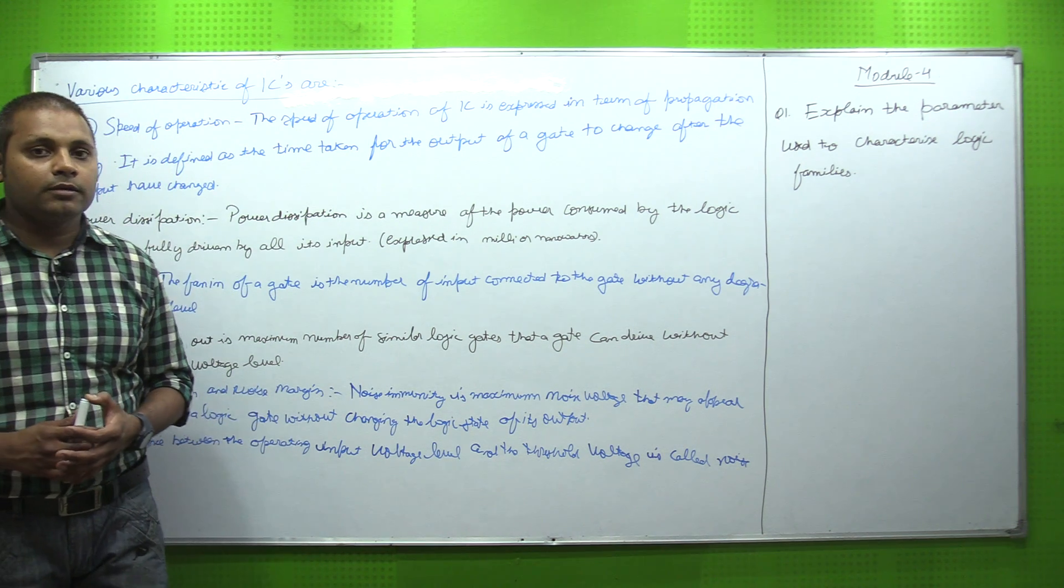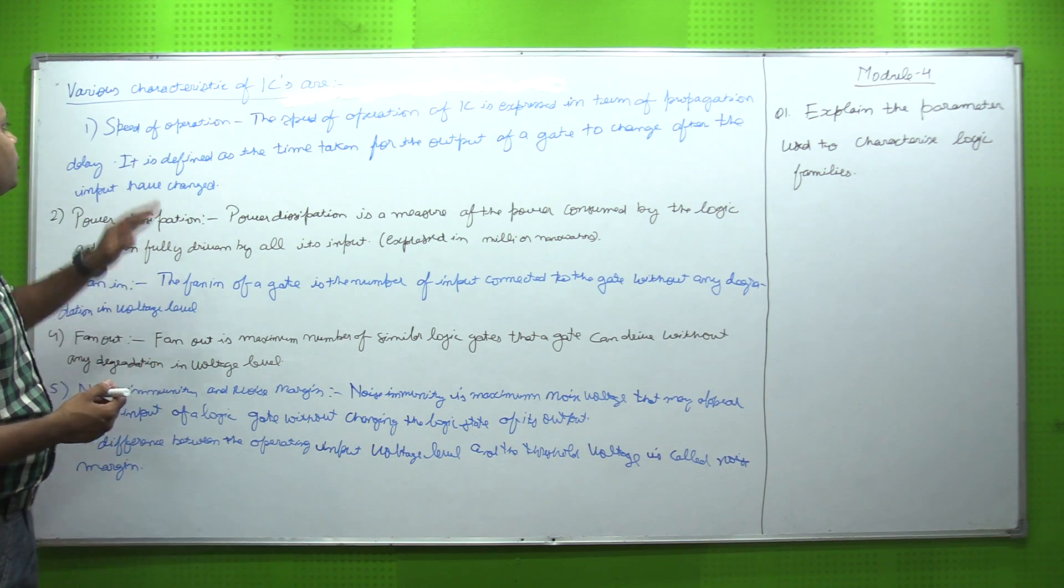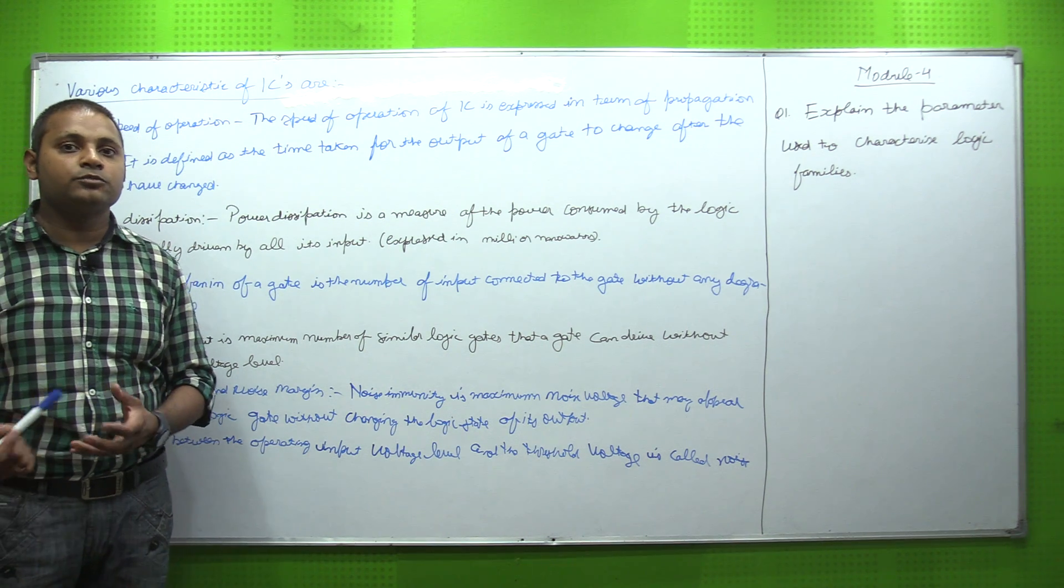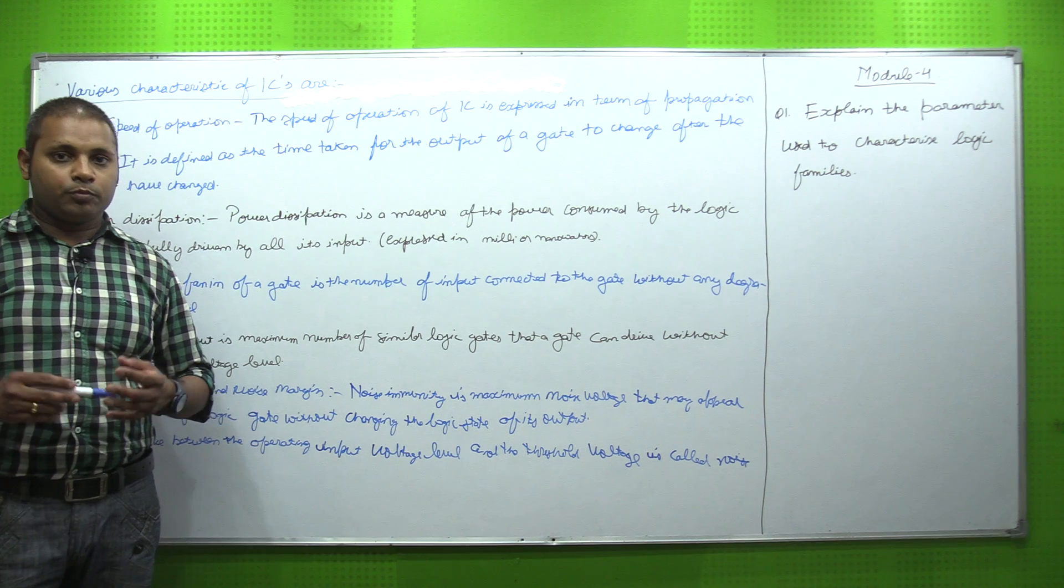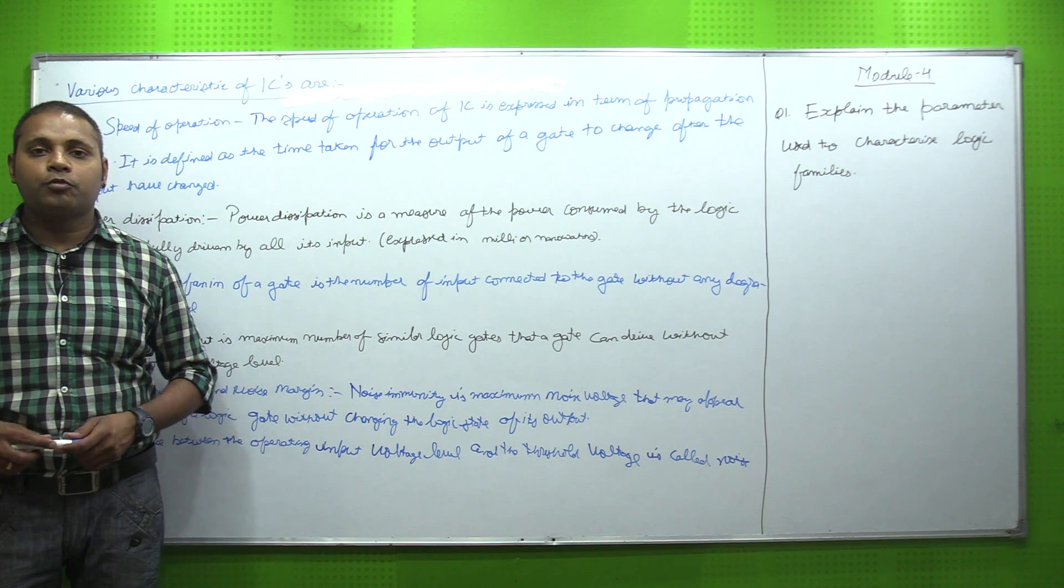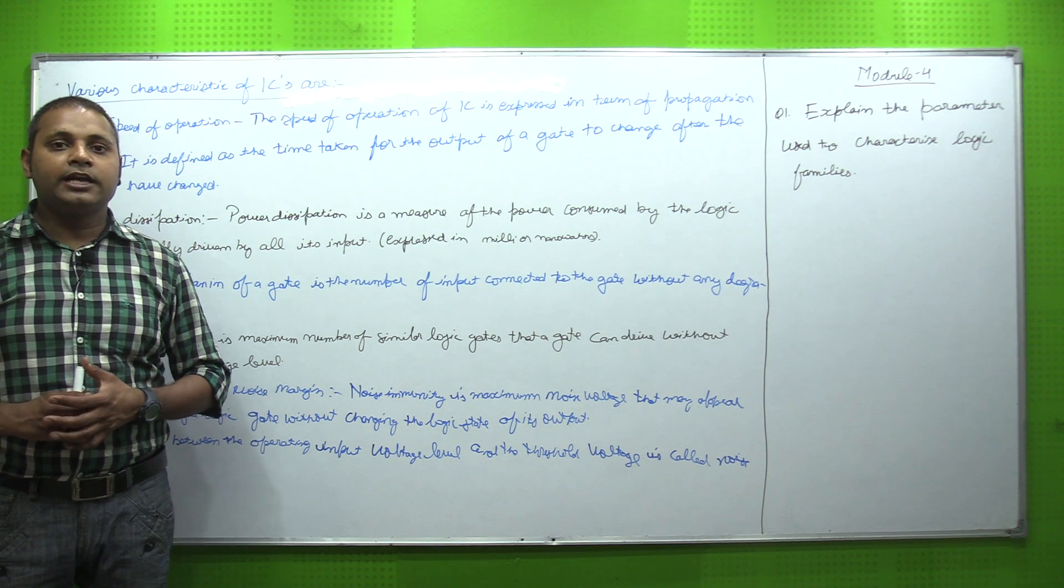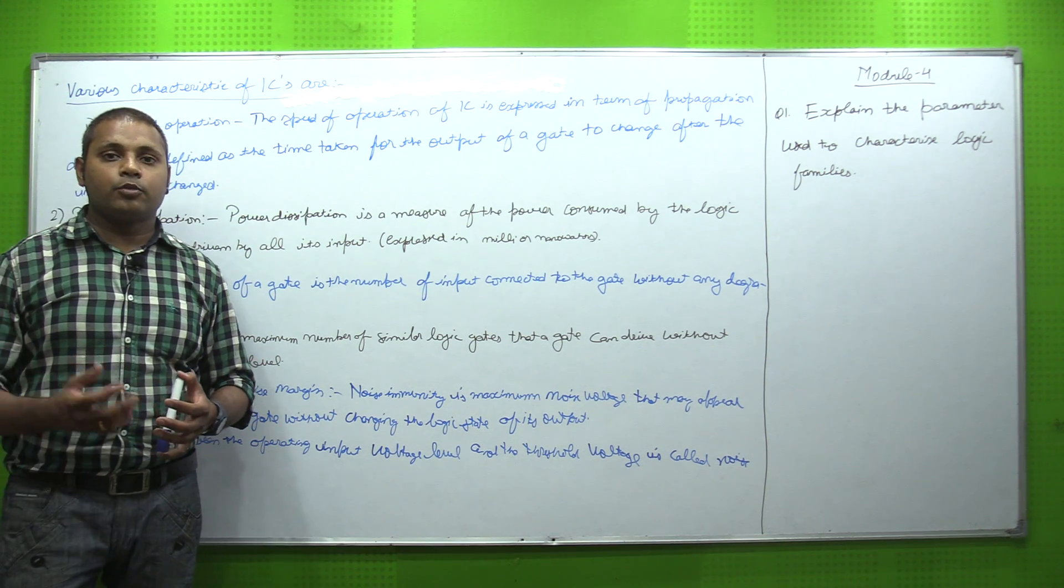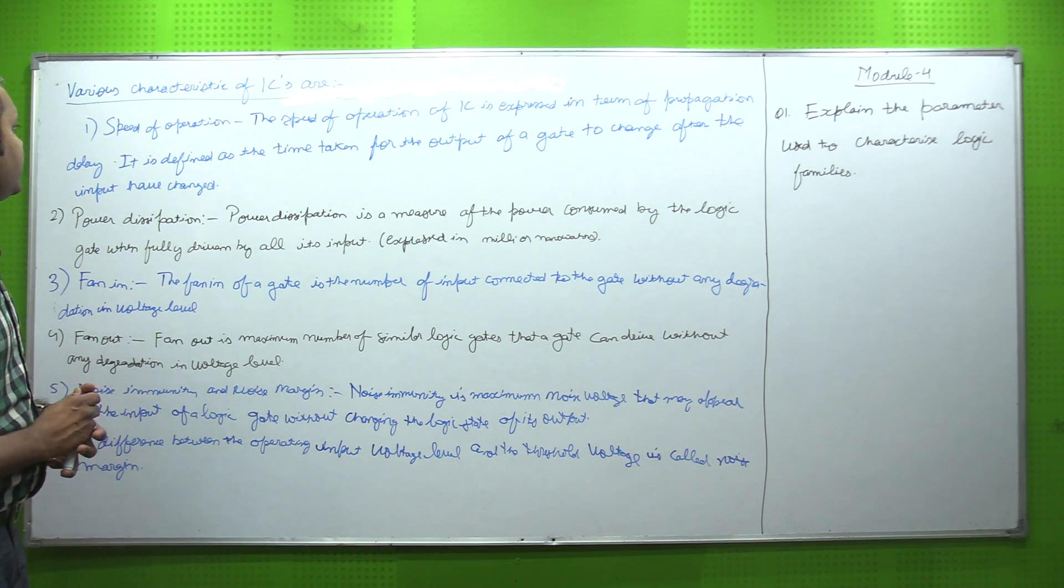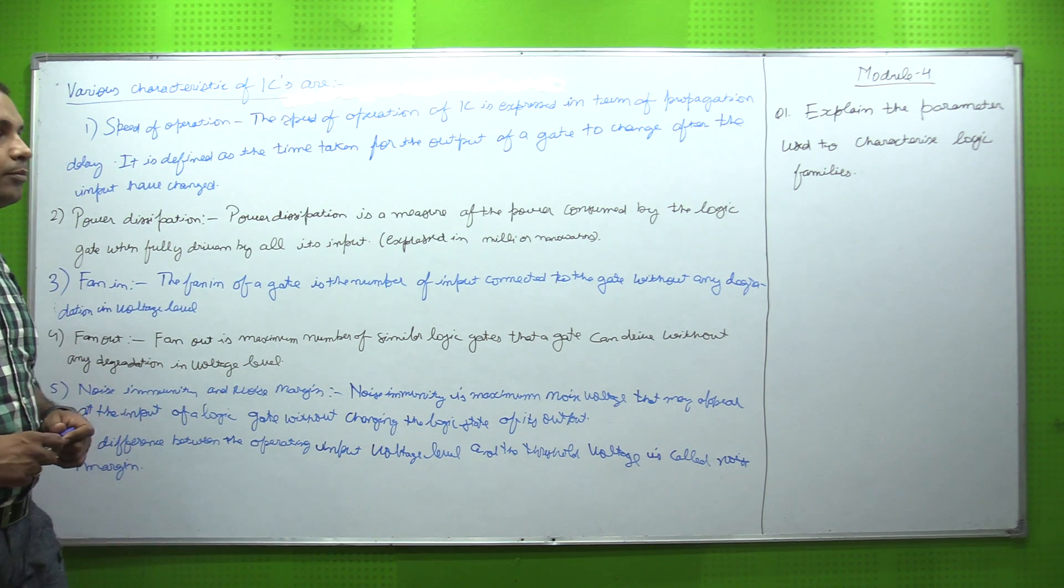Let's see the answer to this question. Various characteristics of ICs - first one is speed of operation. We measure the speed of operation in terms of propagation delay. When we give input at that instant and get output, the time in which the data is processing inside the IC is our propagation delay. The definition is: the speed of operation of IC is expressed in terms of propagation delay. It is defined as the time taken for the output of a gate to change after the input has changed.